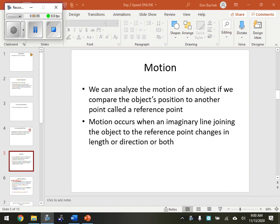We're going to start our actual unit here on physics today. The first lesson was just kind of a little bit of review of scientific notation, significant digits. And we're going to talk a little bit about some different types of motion here today. It says here, we can analyze the motion of an object if we compare the object's position to another point called the reference point.